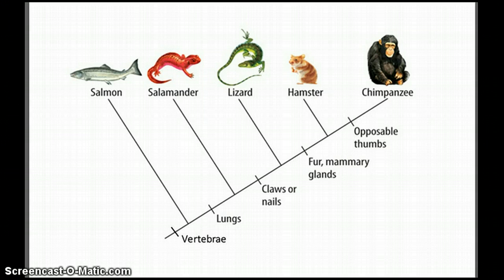We started with vertebrae. When we look at the next characteristic, lungs, we exclude salmon. Salmon do not have lungs, they have gills, and so they are excluded from all the groups from here forward.